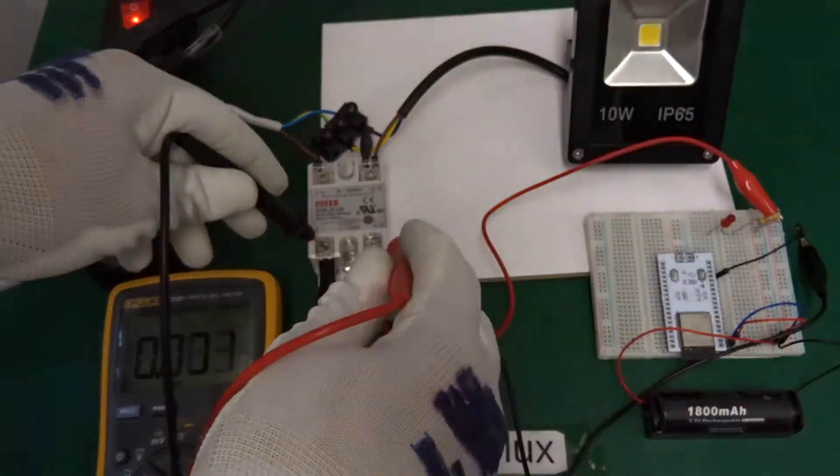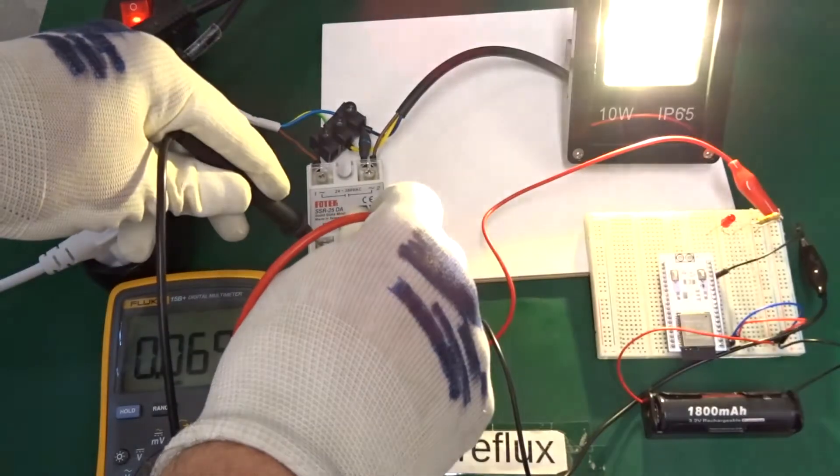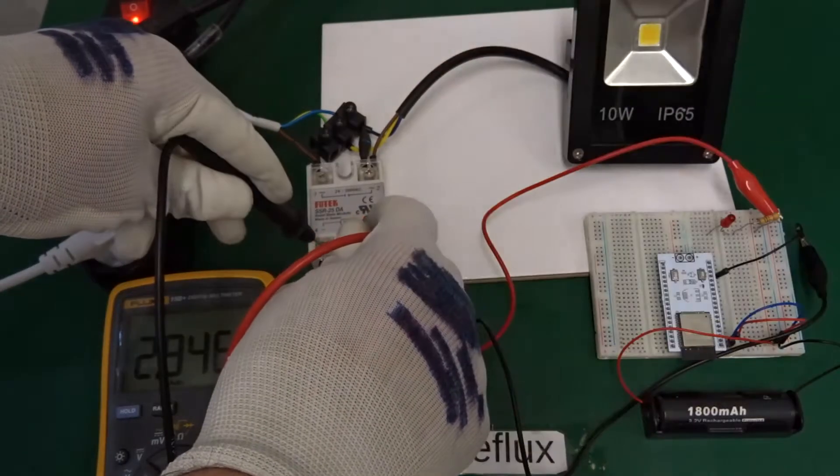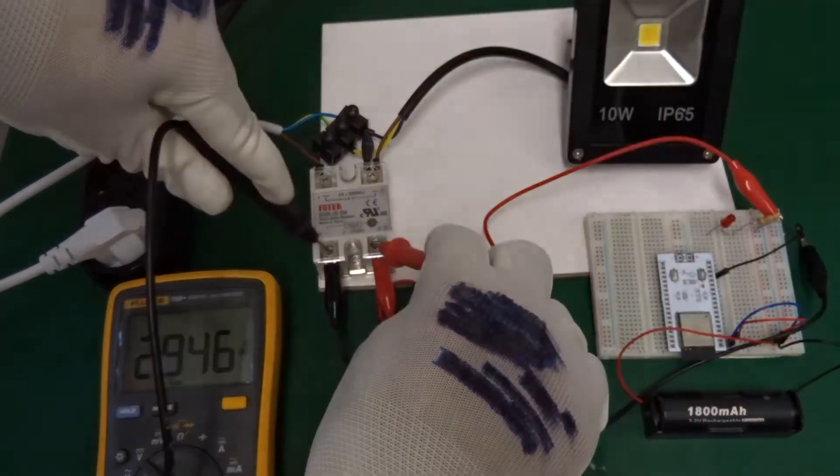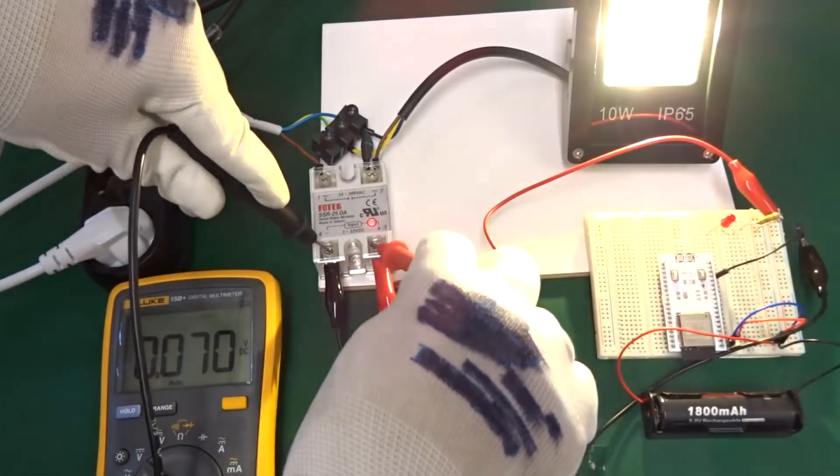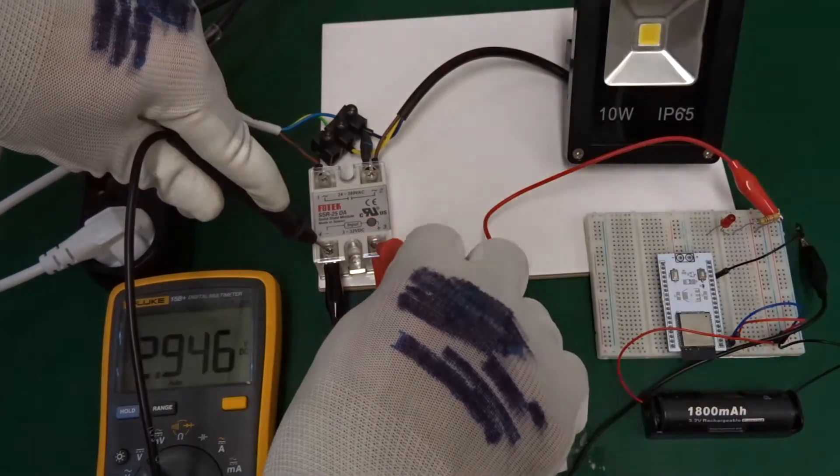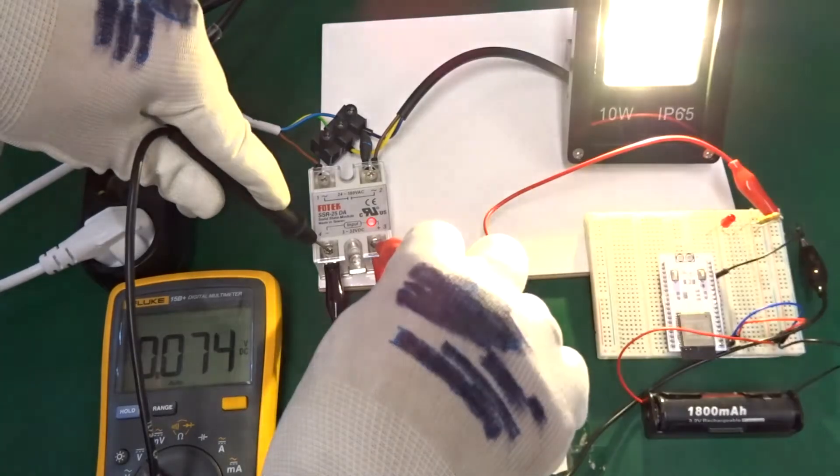So I connect my multimeter in the DC range and let's measure the GPIO output voltage. And we see that it's switching between zero and around three volts.